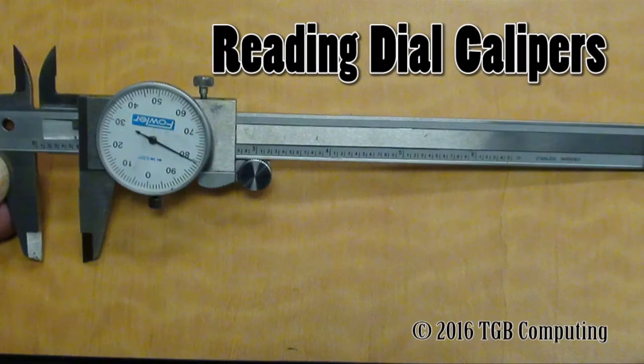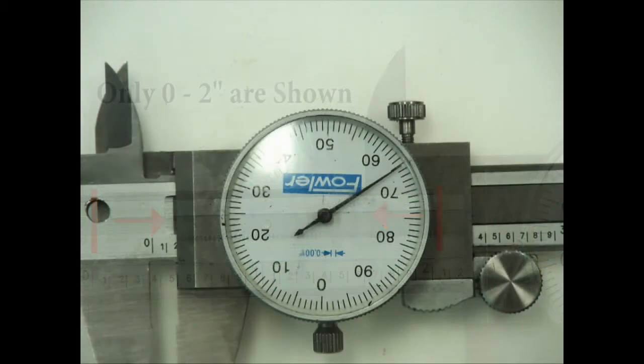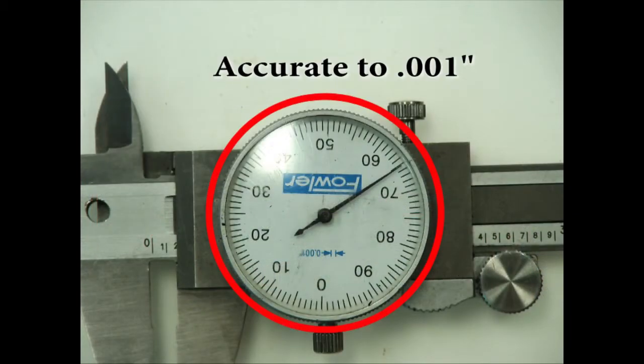Reading dial calipers. The dial caliper has a linear scale from 0 to 6 inches and a dial scale to read down to one thousandth of an inch.